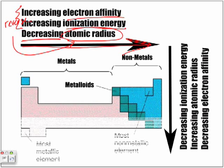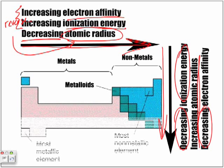Same thing holds true if we decide to look moving downward in the group. The atomic radius here increases. Thus, ionization energy, electron affinity has to decrease. It's always going to be the opposite direction.